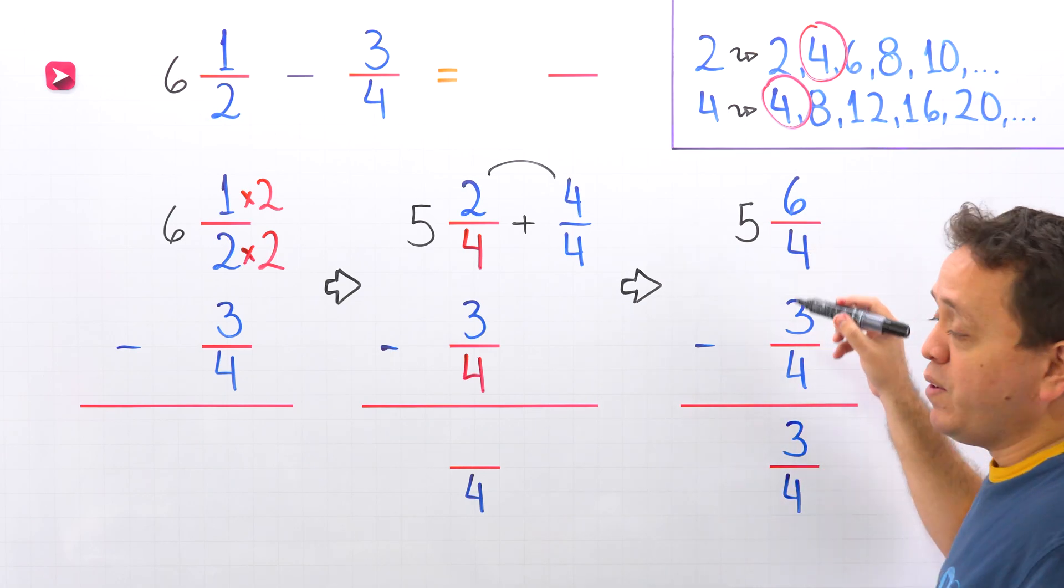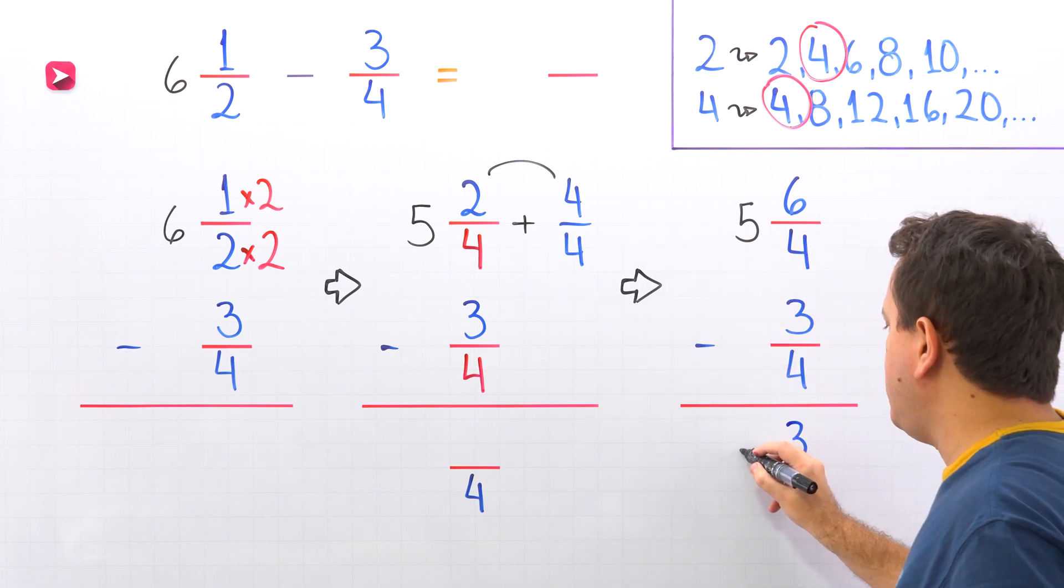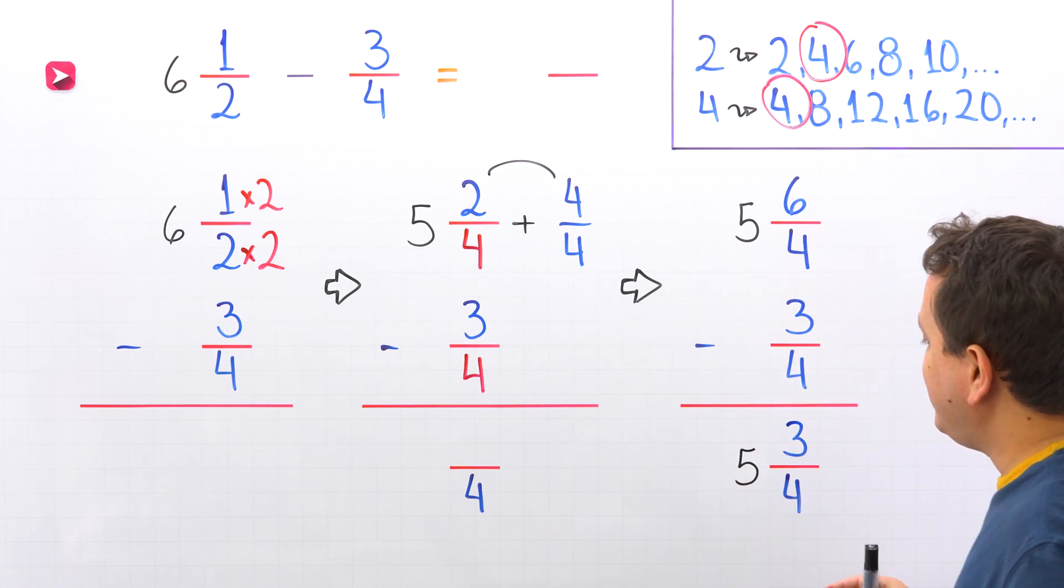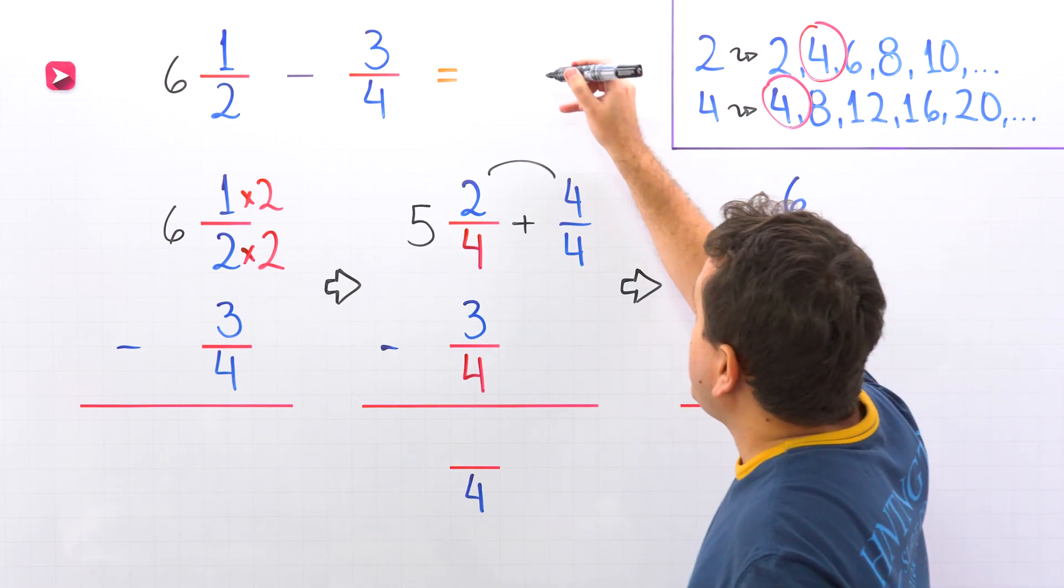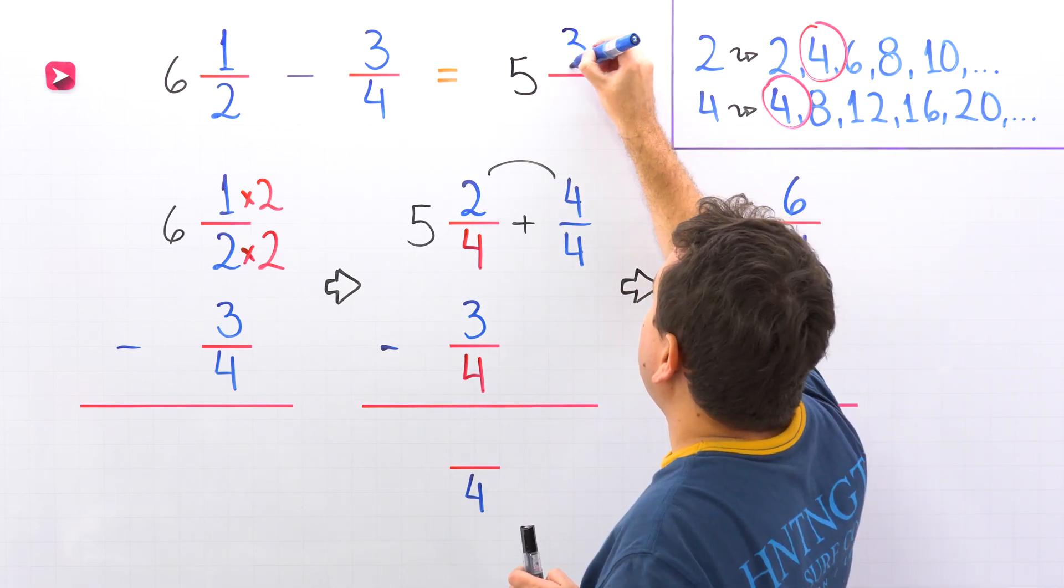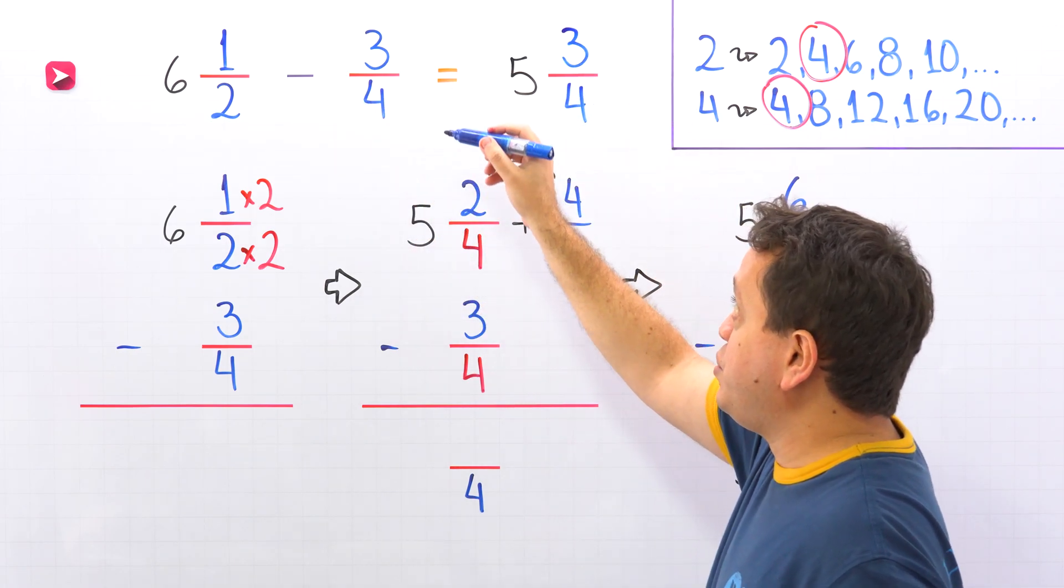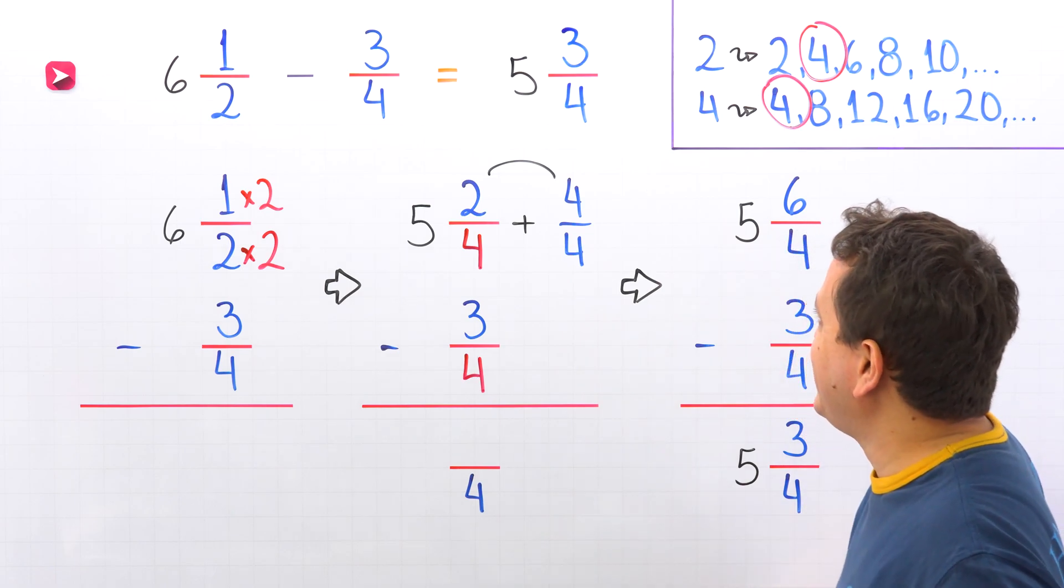Finally, we find the difference of the whole numbers. We have 5 minus 0. That gives us 5. The final answer is 5 and 3/4. We can put the answer over here, 5 and 3/4. In that way, 6 and 1/2 minus 3/4 give us 5 and 3/4. Nice.